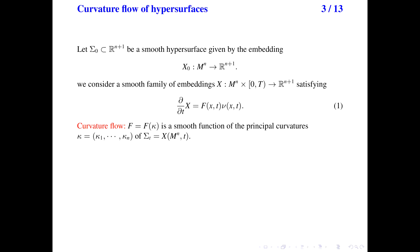This is part one of my talk. We first recall the definition of the curvature flow for hypersurfaces. Suppose we have an initial smooth hypersurface sigma zero in Euclidean space, given by the embedding x zero. The curvature flow of the hypersurface is a family of embeddings x depending on time, satisfying that the time derivative of x is given by a function f times the normal vector nu. Here the function f depends mostly on the principal curvatures kappa of the evolving hypersurface.